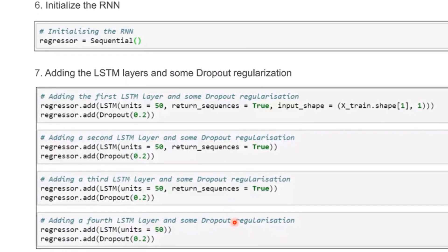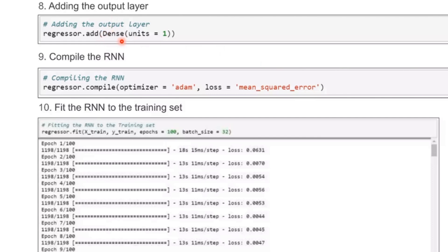Additionally, add some dropout regularization. Add the output layer, then compile the program. After compiling, when the number of epochs increases, the loss decreases.